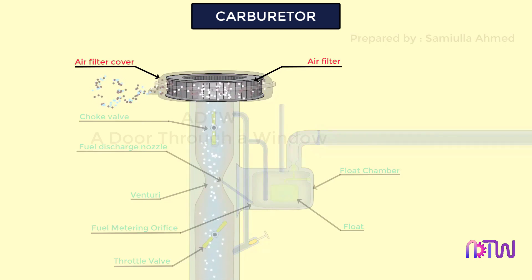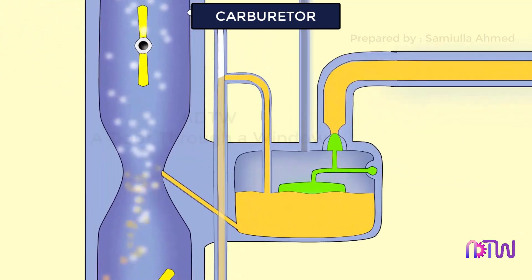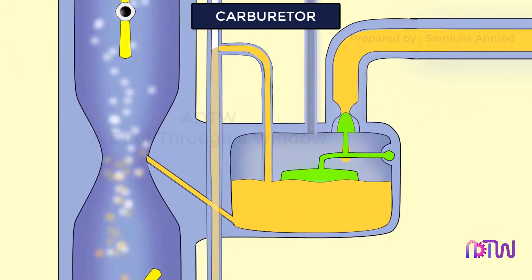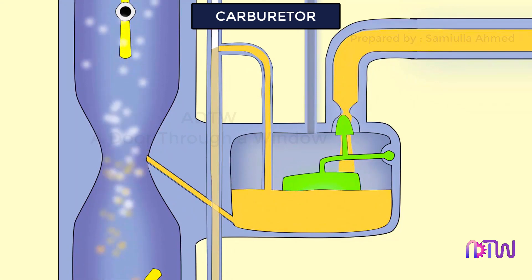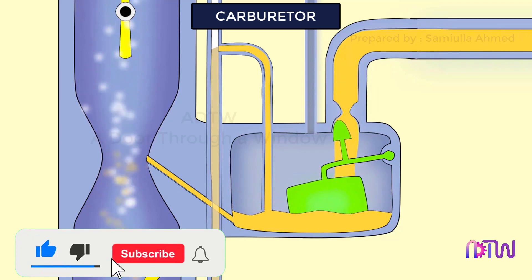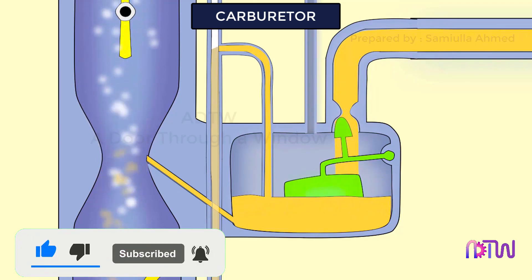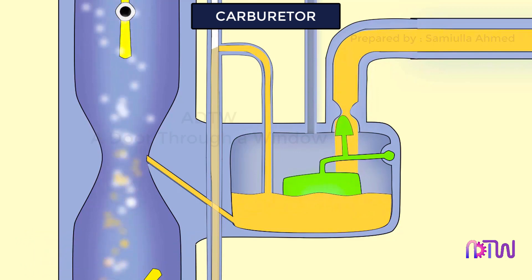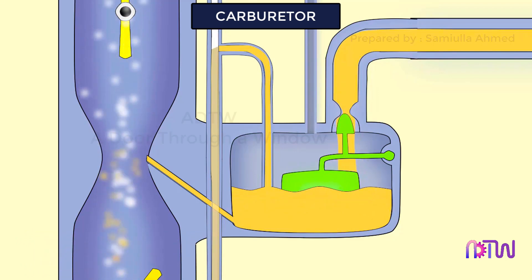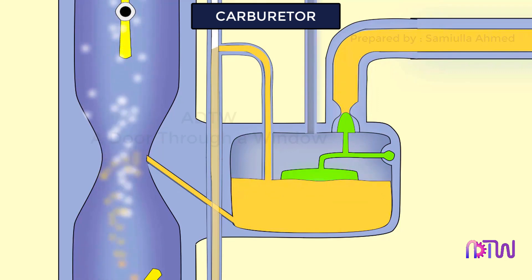The function of the float and needle valve system is to maintain a constant level of gasoline in the float chamber. If the amount of fuel in the float chamber falls below the designed level, the float goes down, thereby opening the fuel supply valve and admitting more fuel. When the designed level of fuel is reached, the float closes the fuel supply valve, stopping the additional fuel supply.